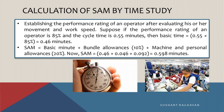SAM equals basic minute plus bundle allowances (10%) plus machine and personal allowances (20%). Therefore, SAM equals 0.46 + 0.046 + 0.092 = 0.598 minutes.